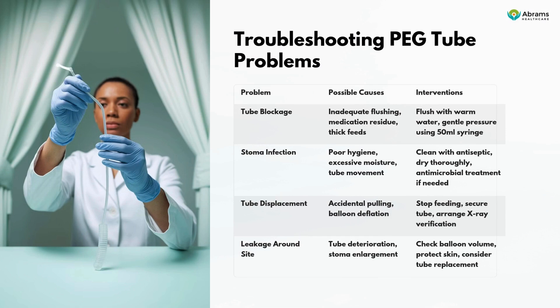Troubleshooting PEG tube problems: for tube blockage caused by medication residue or thick feeds, flush with warm water using gentle pressure with a 50 mL syringe. For stoma infection caused by poor hygiene or excessive moisture, clean with antiseptic, dry thoroughly, and apply antimicrobial treatment if needed. For tube displacement from accidental pulling or balloon deflation, stop feeding, secure the tube, and arrange x-ray verification. For leakage around the site from tube deterioration or stoma enlargement, check balloon volume, protect the skin, and consider tube replacement.